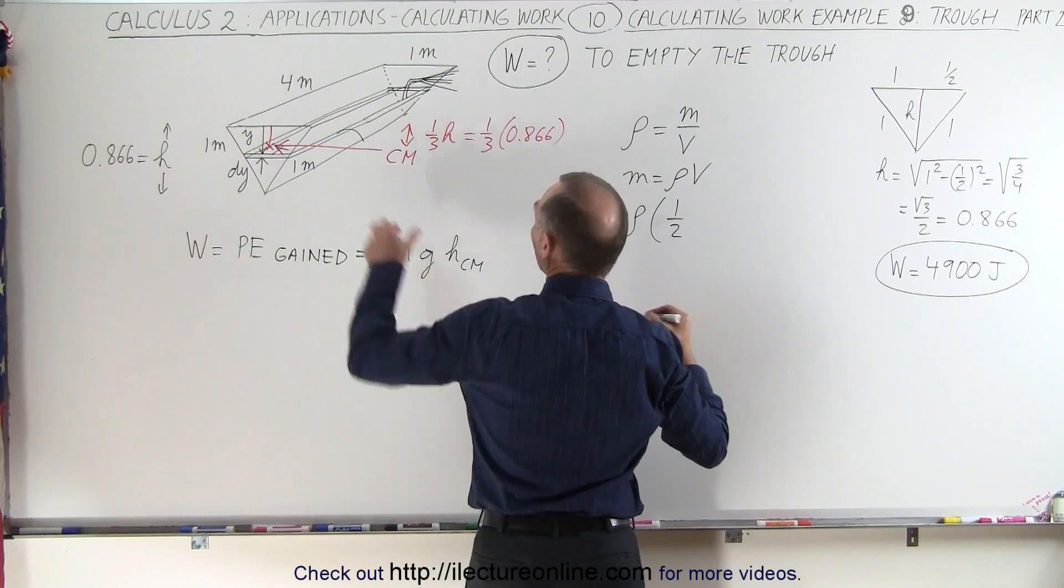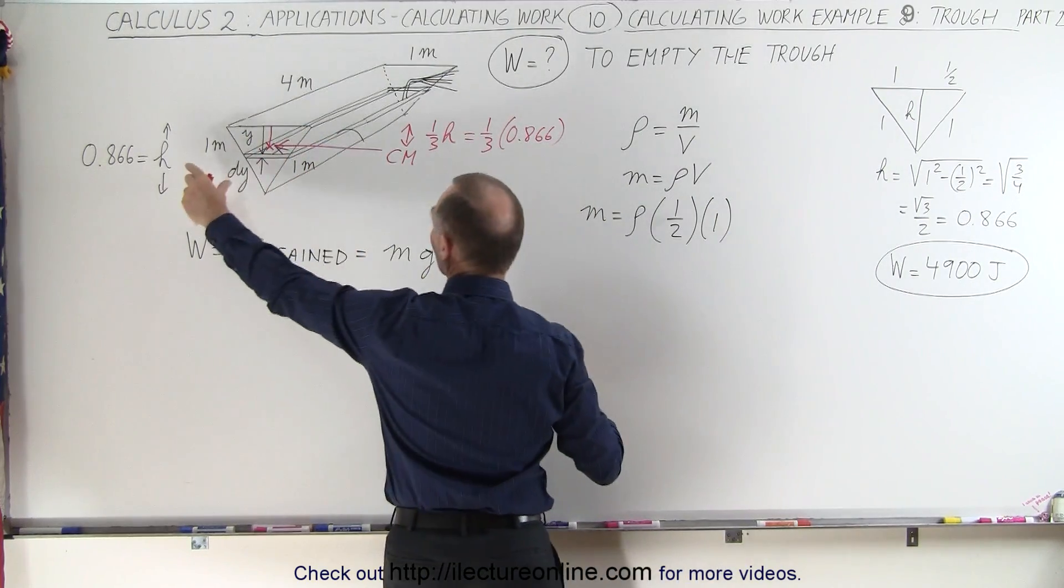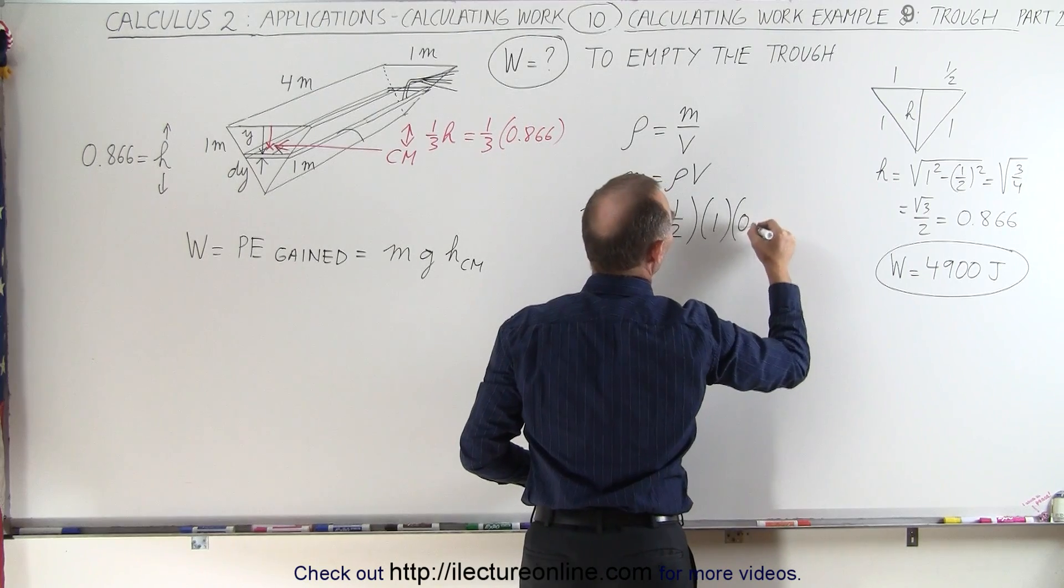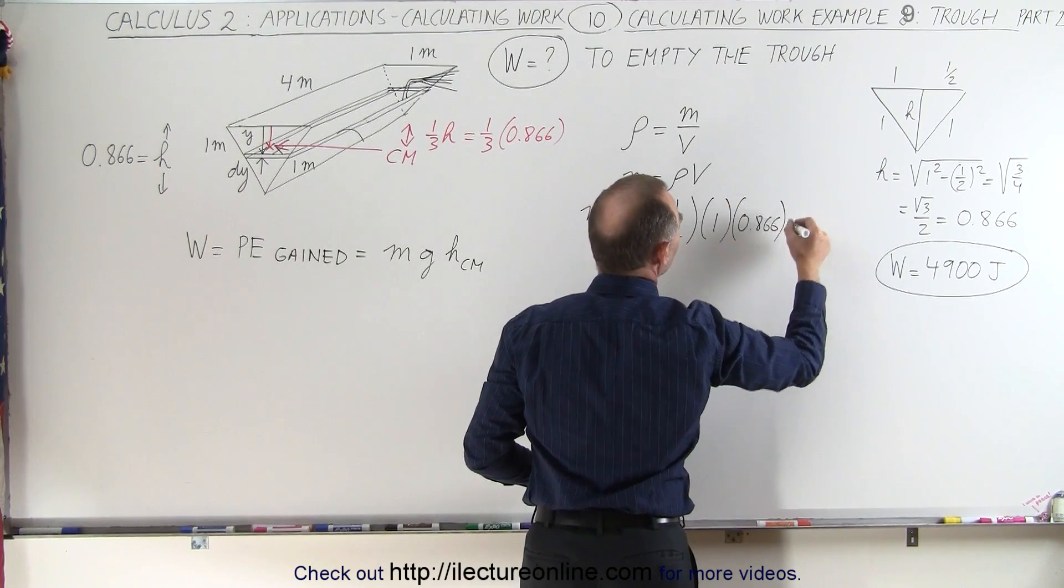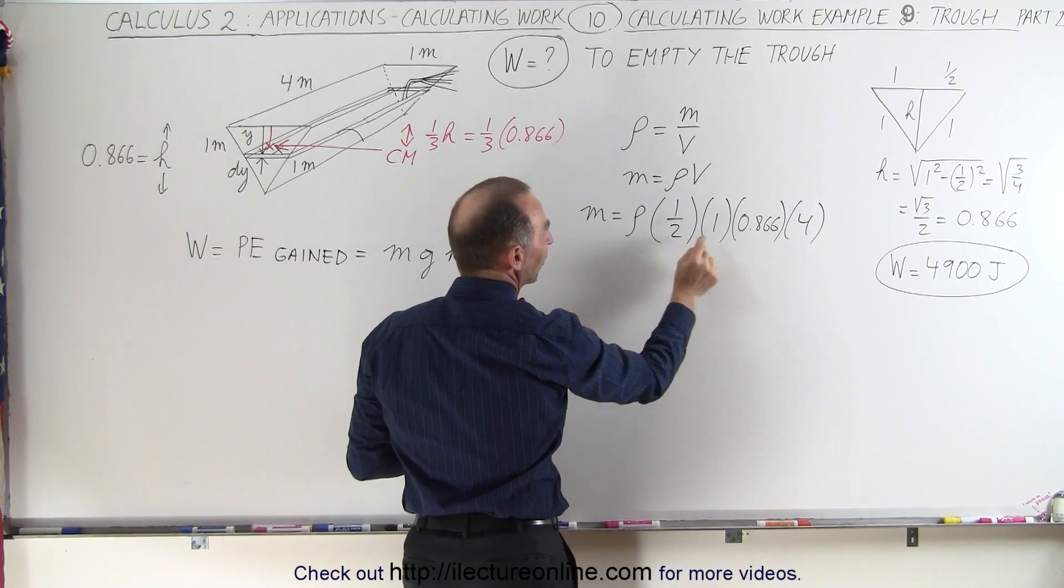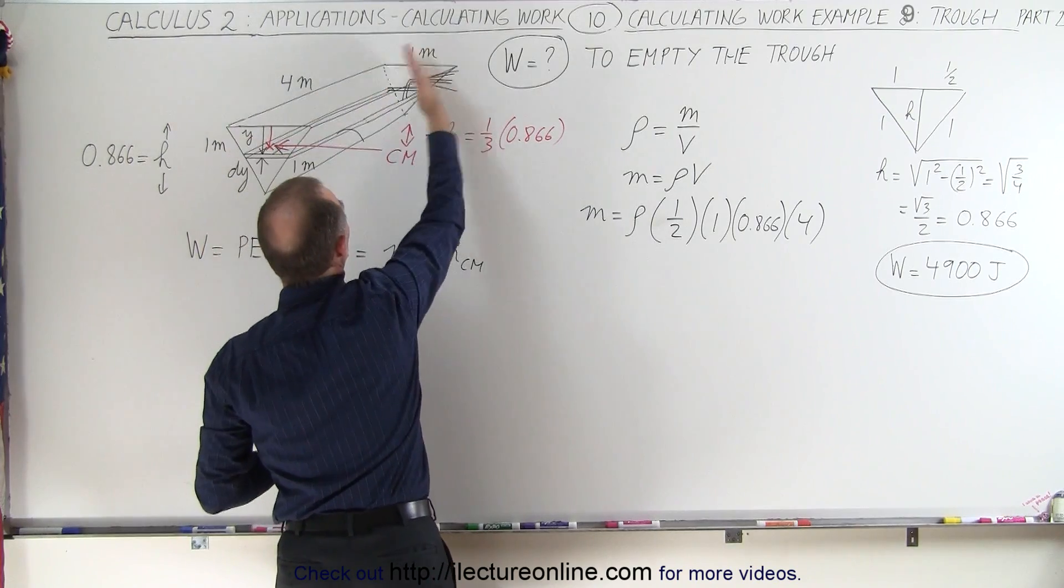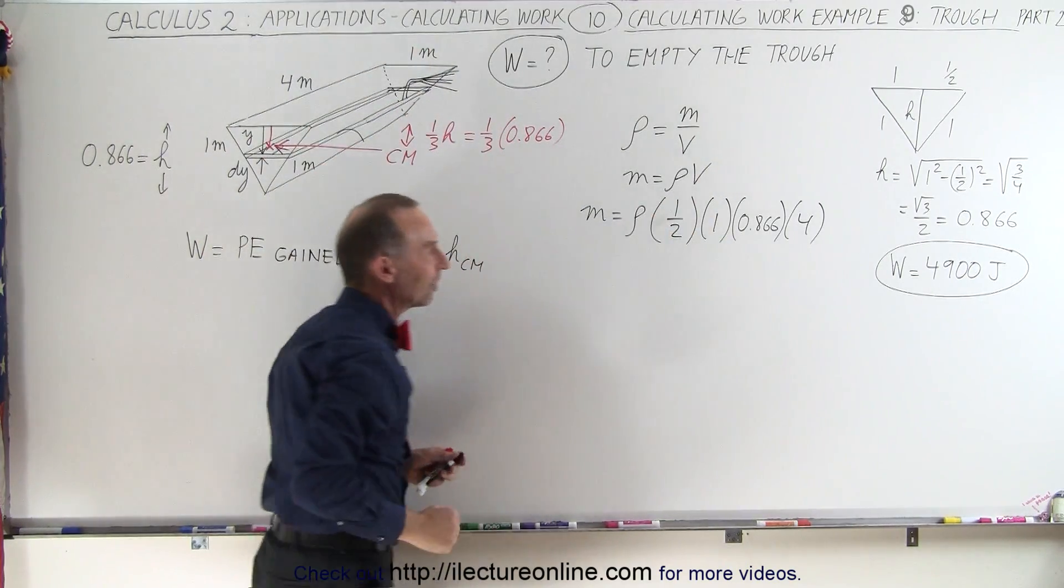So the area of the base would be the area of the triangle, so volume will be one-half the base, which is one, times the height, 0.866, times the length, 4. So the volume of this trough is one-half the base times the height, which is the cross-section area of the triangle, times the length of that trough, which is in this case the height.